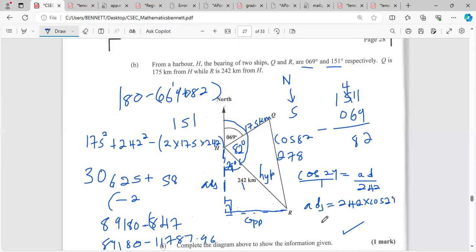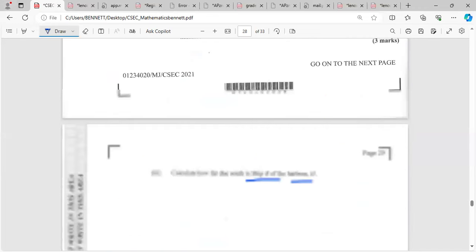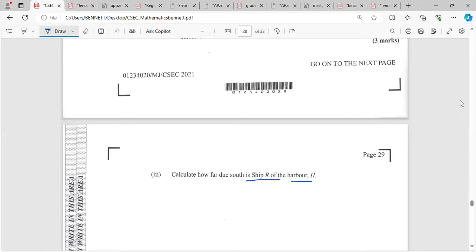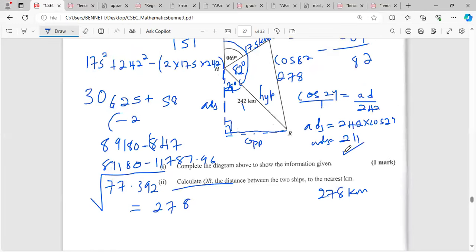Let me calculate. 242 times cosine 29 to the nearest kilometer will be 211. And there we have it.